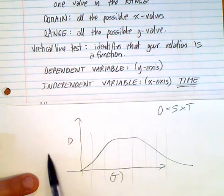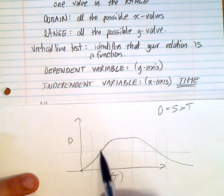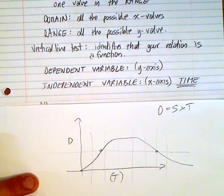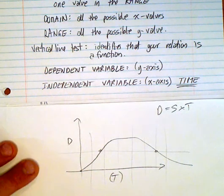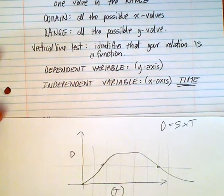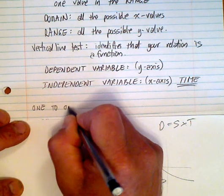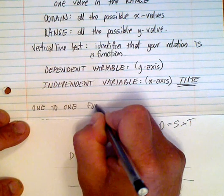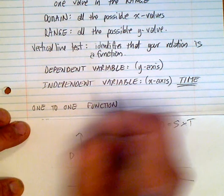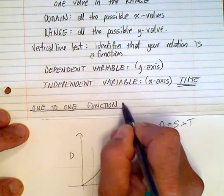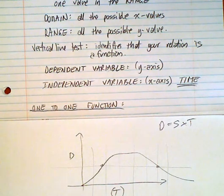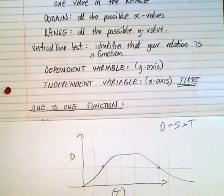Notice that this passes the vertical line test all the time. But what about a horizontal line test? Notice that I crossed twice. So, a horizontal line test is used to determine if we have what we call a one-to-one function, which means that, again, it's a little more specific.